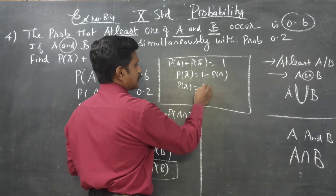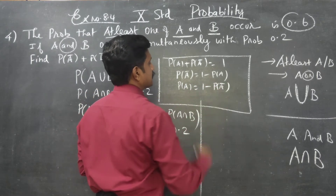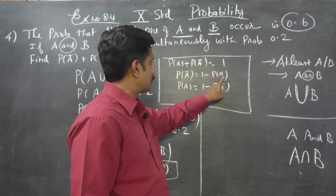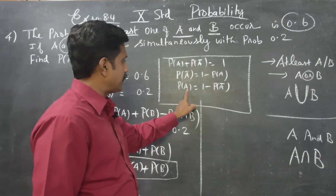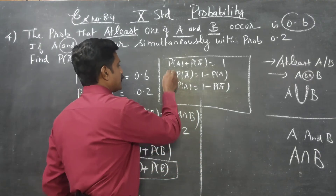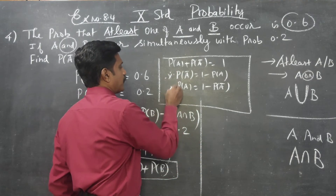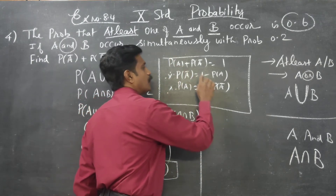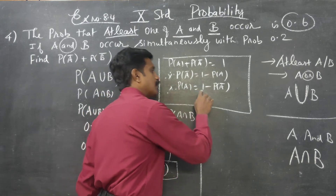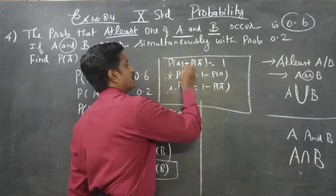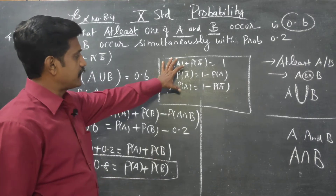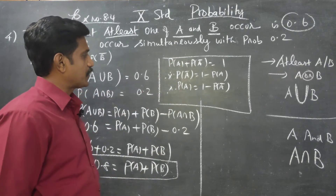So: P of A is equal to 1 minus P of A dash, and P of A dash is equal to 1 minus P of A. This is a very, very important formula. We will use this formula now. Instead of writing P of A, I am going to write 1 minus P of A dash.